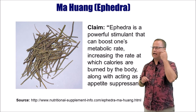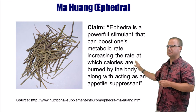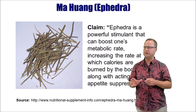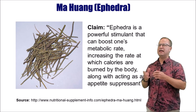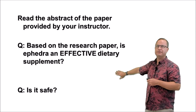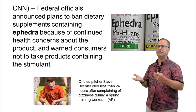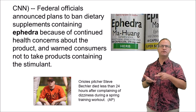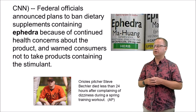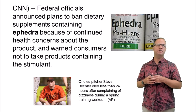The second supplement is called ma huang, otherwise known as ephedra. The claim is that ephedra is a powerful stimulant that boosts metabolic rate, increases calorie burning, and acts as an appetite suppressant. Ma huang was a very popular supplement in the 90s and was finally banned in 2004. Studies found it was very effective at causing weight loss, but also found it wasn't safe — several high-profile deaths occurred, including athletes who took it as a stimulant, exerted themselves, and went into cardiac arrest. So it was effective but deemed unsafe.